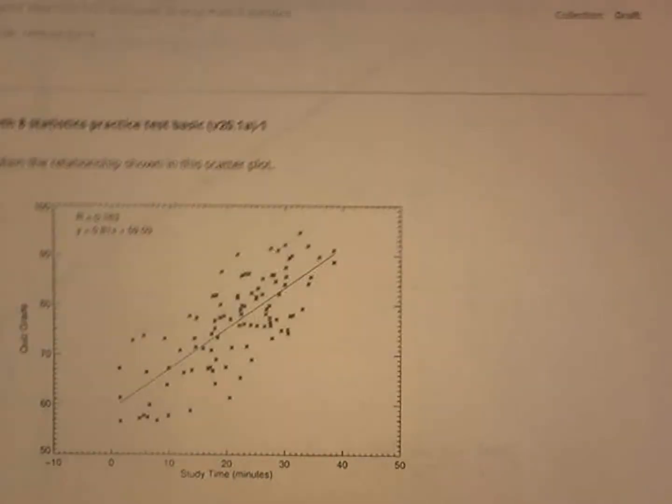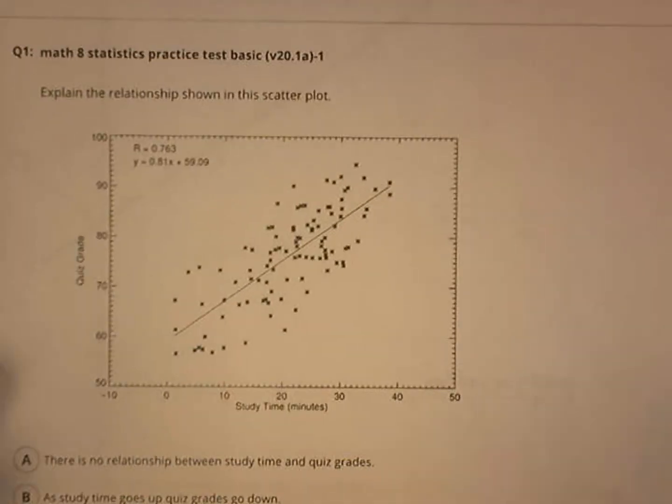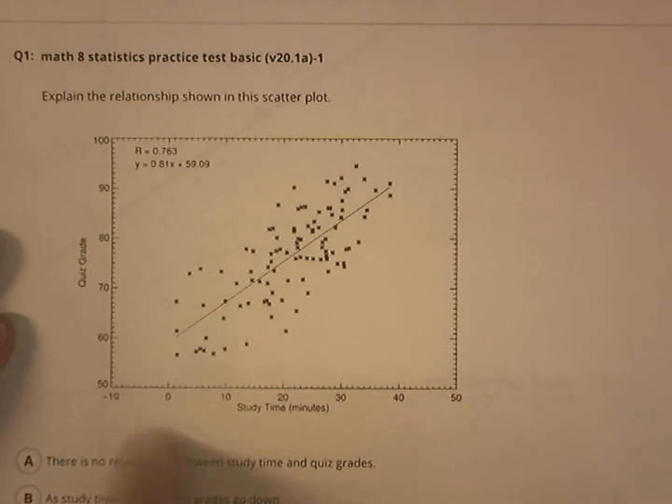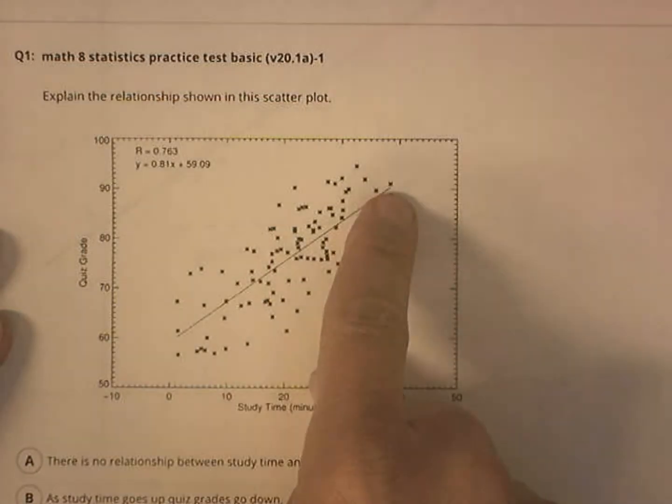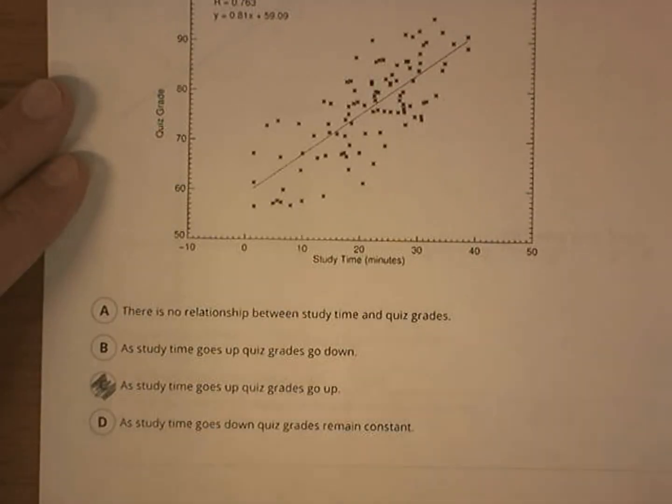So I have this scatter plot with a best fit line through it, and the question is, what's going on? The correlation shows that as study time goes up, grades go up. The more you study, the better your grades. So as study time goes up, quiz grades go up.